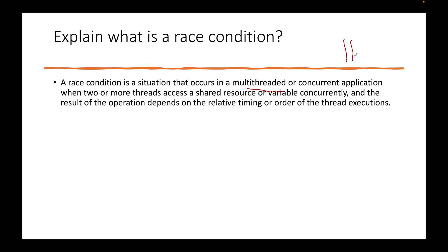In previous videos on multi-threading we have gone into the details of the difference between a process and a thread and how we create threads. I would recommend watching those previous videos to gain foundational knowledge. There is one common misconception between two terms in multi-threading: race condition and deadlock. In the next videos in the series we'll talk about deadlock, but today's video is focused on race condition — the types, the code, and in part two we'll cover how to prevent it.